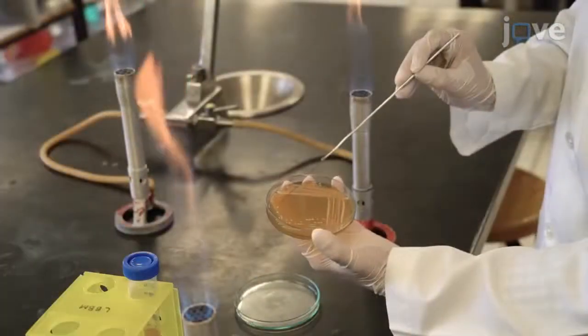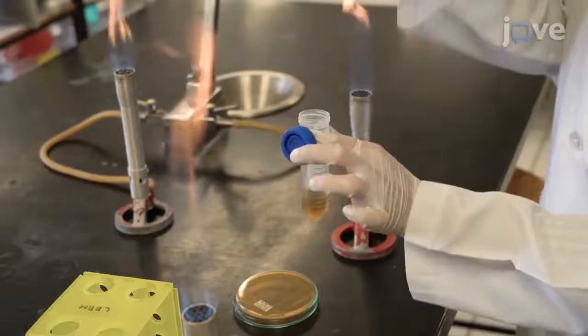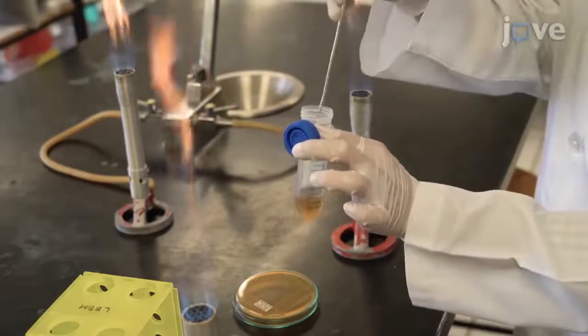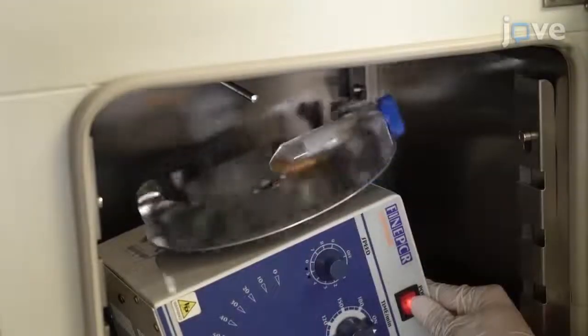Then inoculate a single isolated colony in a new conical tube containing 10 milliliters of cold sterile 2% YPD broth for overnight culture at 30 degrees Celsius with shaking.